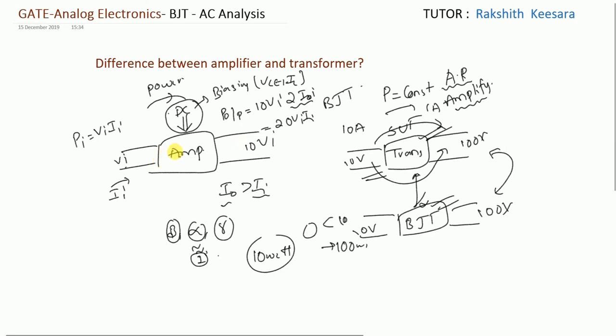This is the basic difference between amplifier and transformer. Amplifier increases the power level while transformer keeps the power as constant. In both cases voltage is increased. In amplifier current level will also increase. But in transformer according to voltage current level will change. If voltage increases current decreases. If voltage decreases current increases. So power remains constant. But here power will increase.